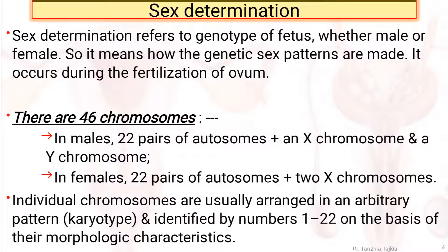Individual chromosomes are usually arranged in an arbitrary pattern and identified by numbers 1 to 22 on the basis of their morphological characteristics.